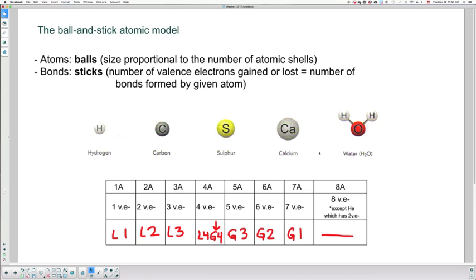Again, when we talk about types of bonds, we will revisit this topic, but for now all you need to know is that the number of bonds corresponds to the number of valence electrons gained or lost, and that these sticks represent those bonds being created during a chemical reaction. So the bonds within a molecule.